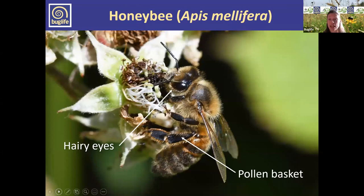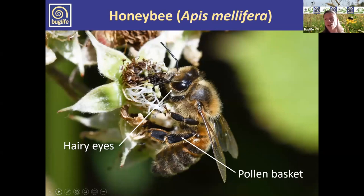We have just one honeybee species in this country — Apis mellifera. This is a social bee that lives in a colony with a queen and workers. We tend to think of them as a domesticated bee that lives in hives and produces honey. The production of honey is important as it allows the colony to survive the winters — something that bumblebees don't do.